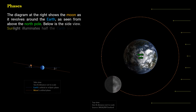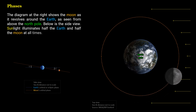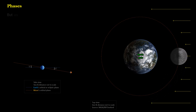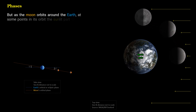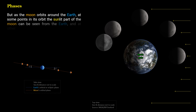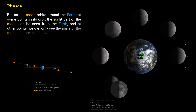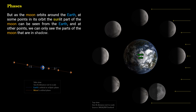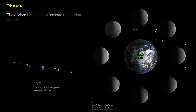Sunlight illuminates half the Earth and half the moon at all times. But as the moon orbits around the Earth, at some points in its orbit the sunlit part of the moon can be seen from the Earth, and at other points, we can only see the parts of the moon that are in shadow. The dashed bracket lines indicate the portion or side of the moon that can be seen from Earth.